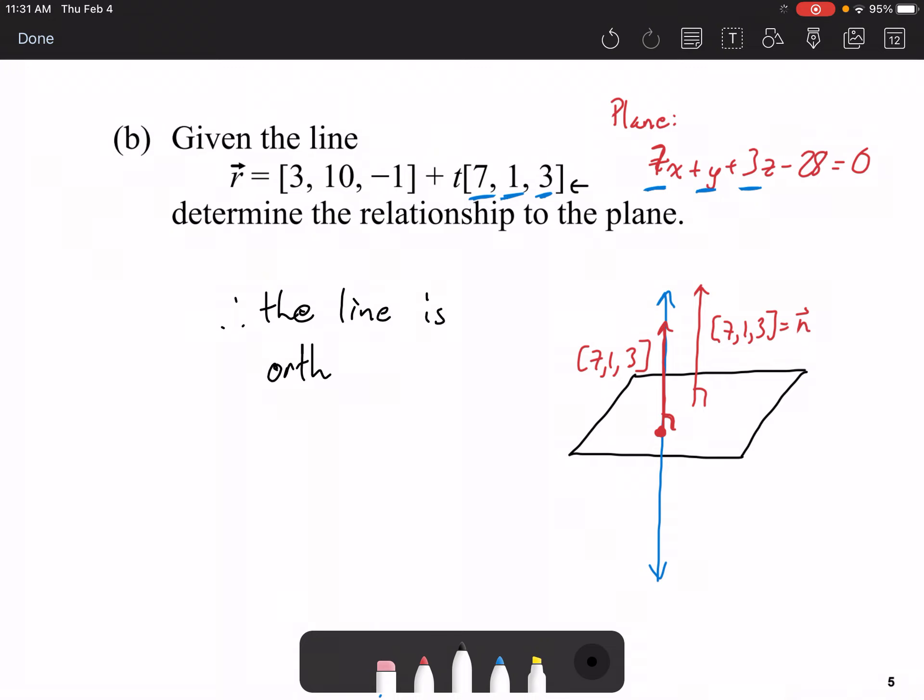I'm going to use the term orthogonal. Okay. It doesn't actually matter whether the point 3, 10, negative 1 actually lies in the plane or not. It doesn't actually matter. It just means that the line is going to intersect at some point in that plane. It doesn't matter what that point of intersection is, but we'll find those kinds of points of intersection later on.